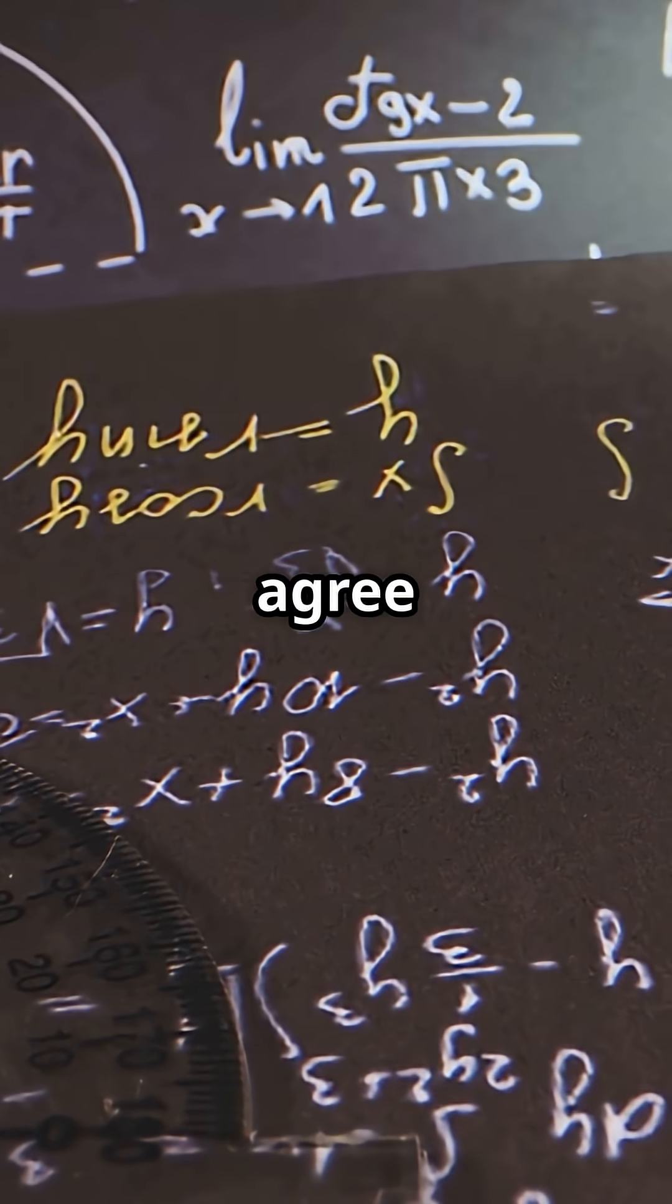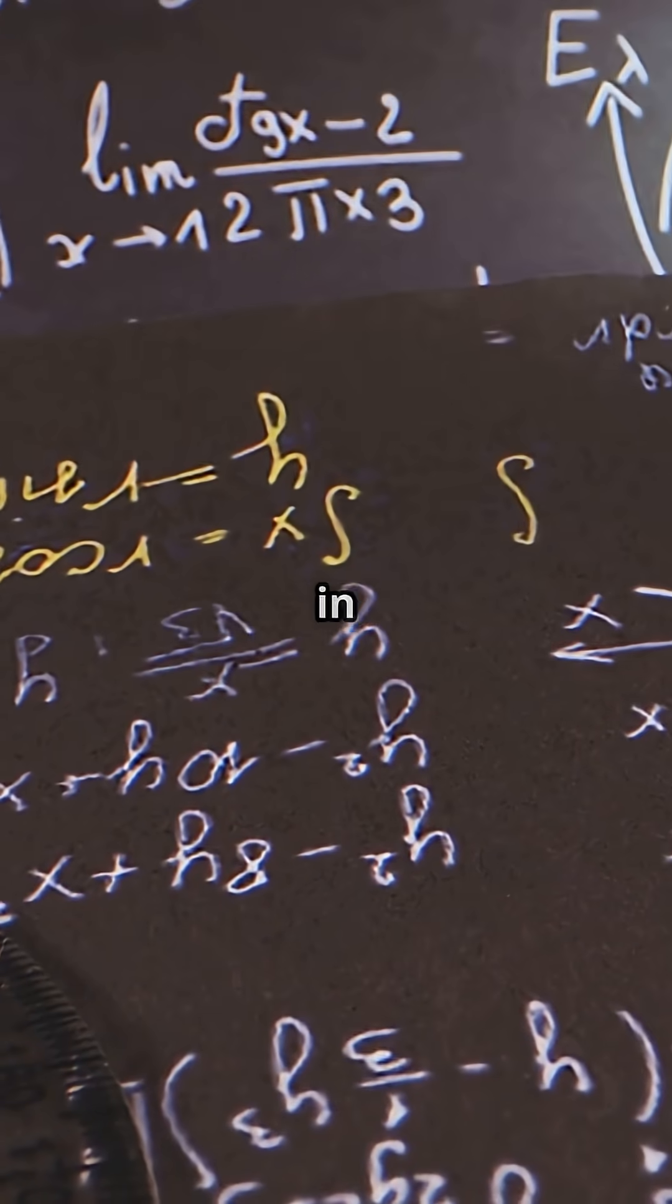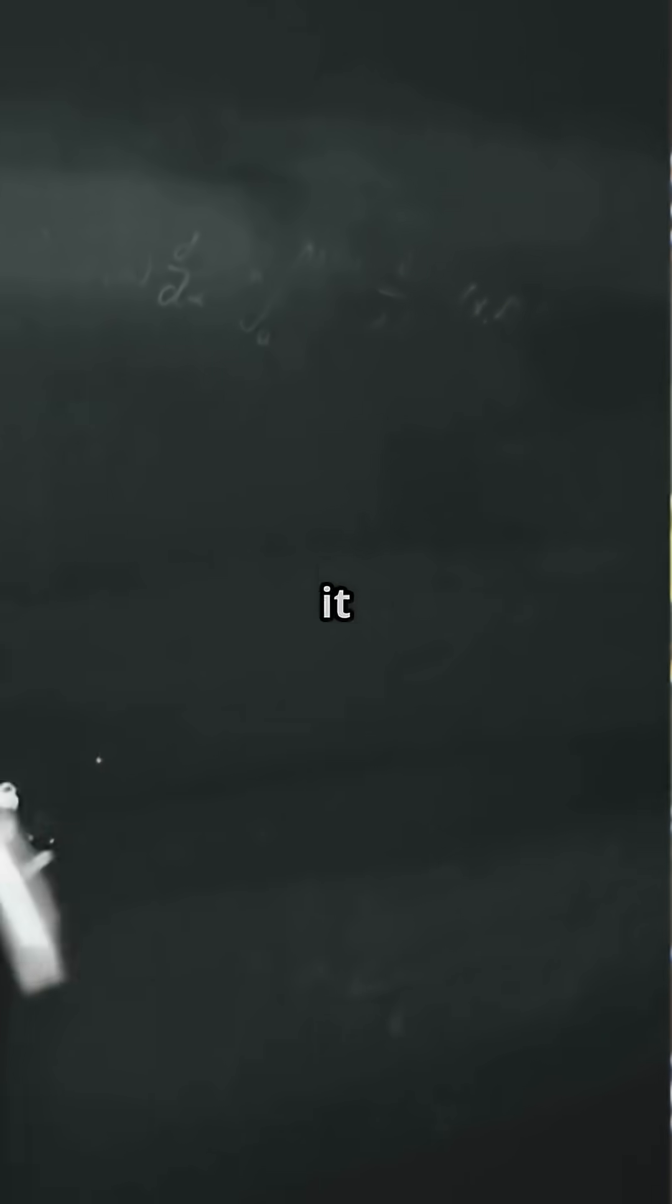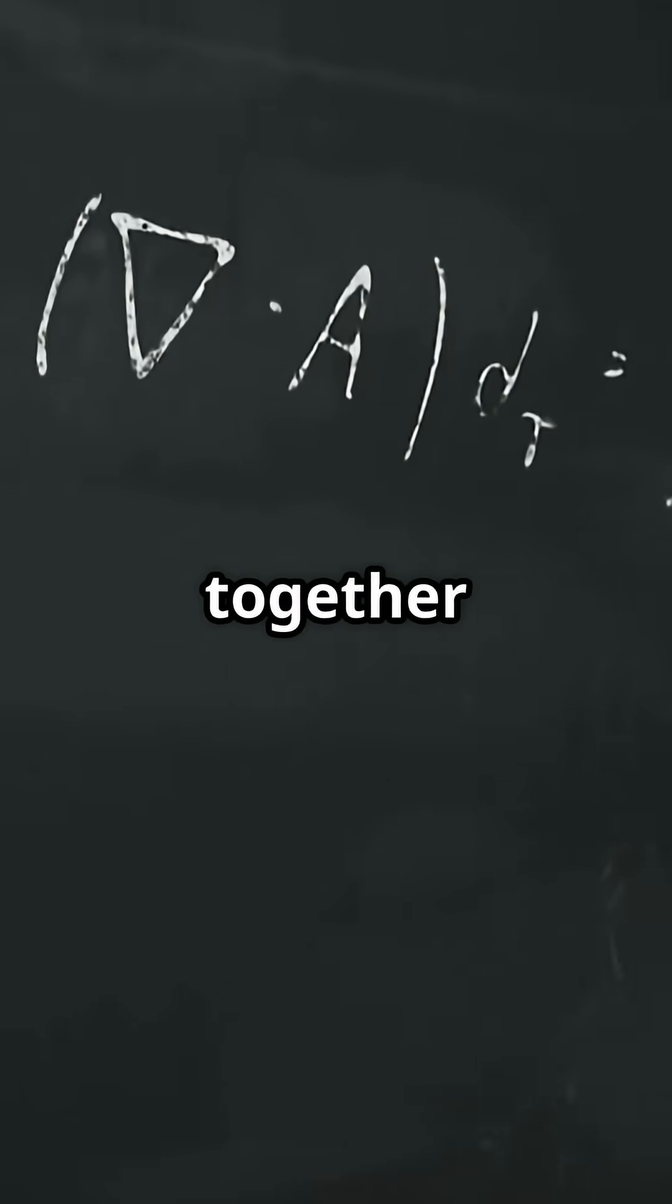Many mathematicians and scientists agree that the most beautiful mathematical formula in the world is Euler's identity, e^(iπ) + 1 = 0. Why is it considered so beautiful? Because in one simple and perfect equation it brings together five of the most fundamental mathematical constants.